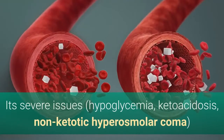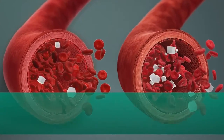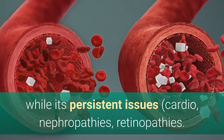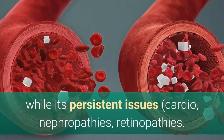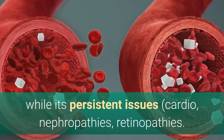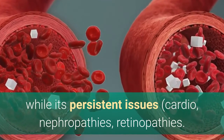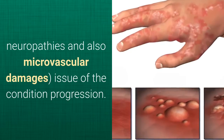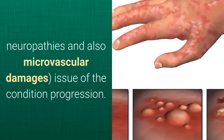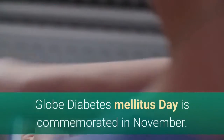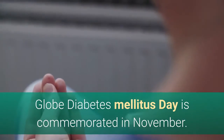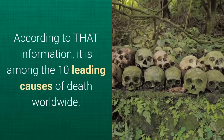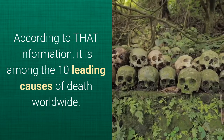Its acute complications — hypoglycemia, ketoacidosis, and non-ketotic hyperosmolar coma — are issues of insufficient control of the condition. Its chronic complications — cardiovascular disease, nephropathies, retinopathies, neuropathies, and microvascular damage — are issues of disease progression. World Diabetes Day is commemorated in November, and according to WHO data, it is among the 10 leading causes of death worldwide.